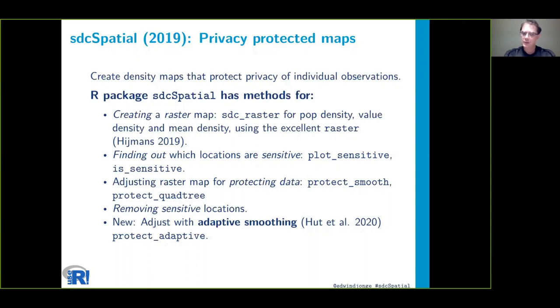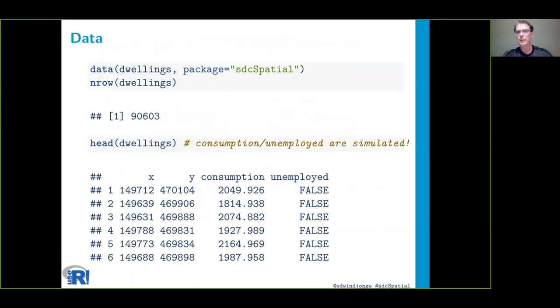What we have added is adaptive smoothing with protect_adaptive. For example, if you look at the dwellings data which is included in the package, you can see that it contains locations which are realistic.